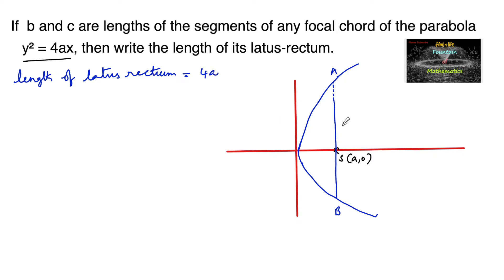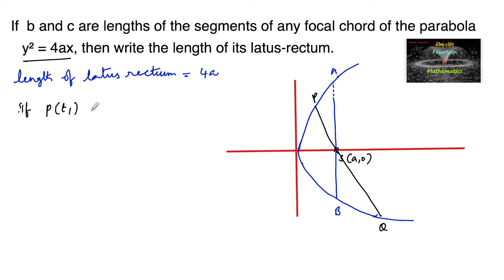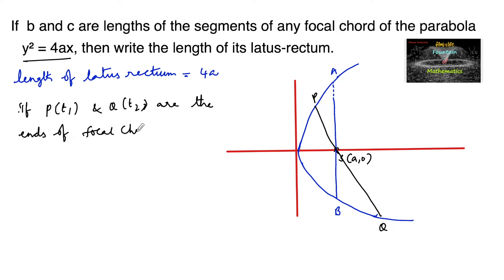Now let PQ be the focal chord. We know that for the properties of the focal chord, if P of T1 and Q of T2 are the ends of the focal chord, then T1 × T2 = −1. This is one important property we have.